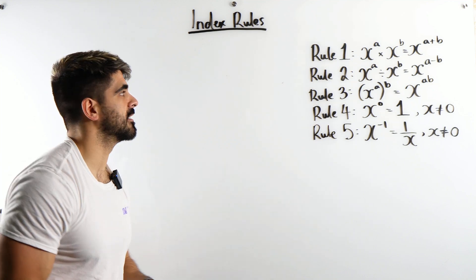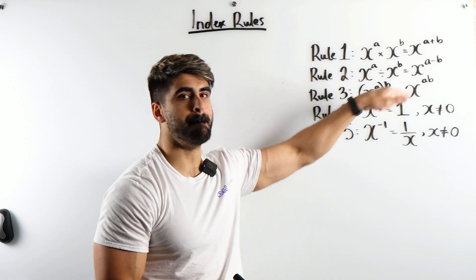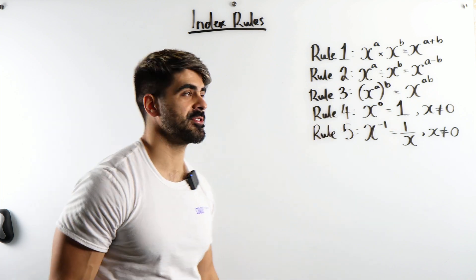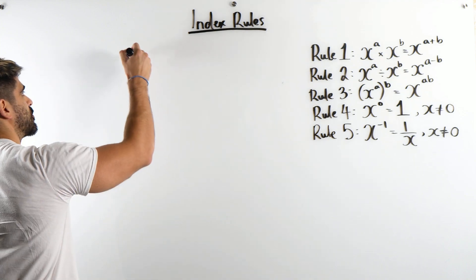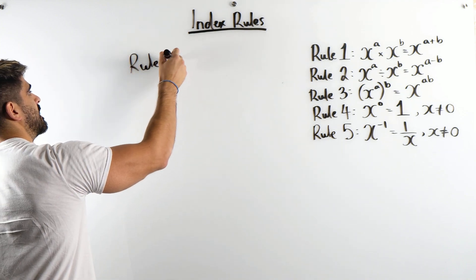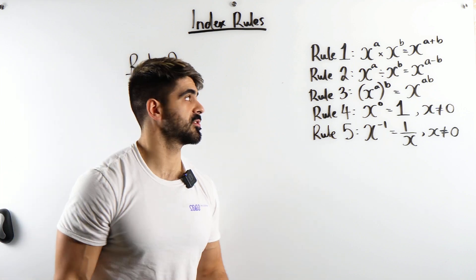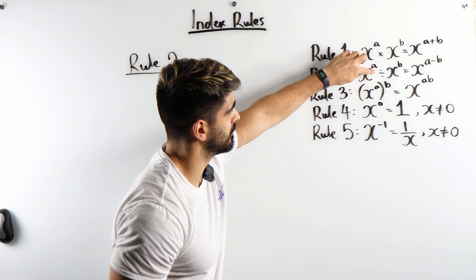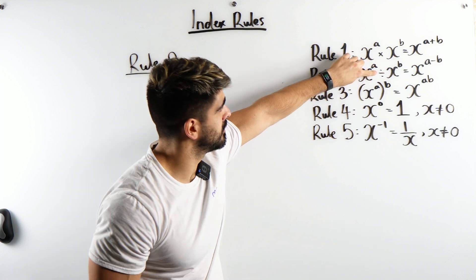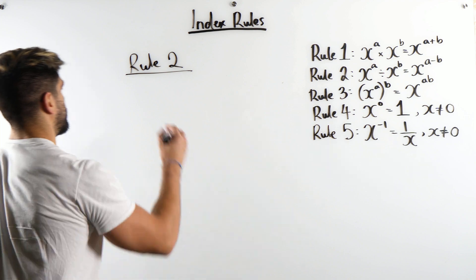Rule two, dividing two numbers with the same base, we subtract the powers. I think the best way to look at rule two is instead of looking at it as a division symbol, let's look in terms of fractions. That's actually where the divide symbol comes from. That line is a fraction. You have something on the top, something on the bottom.